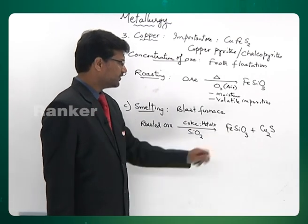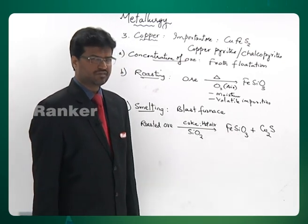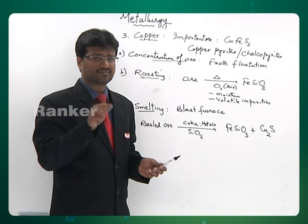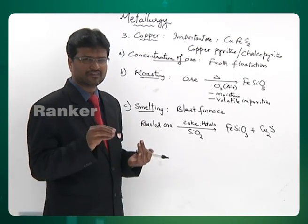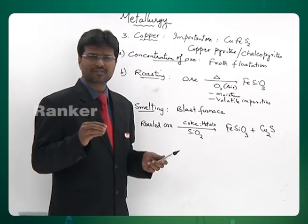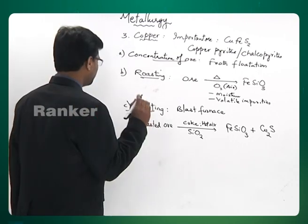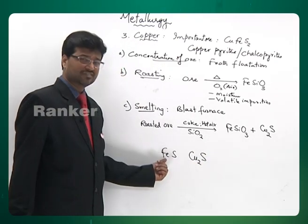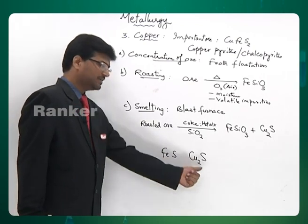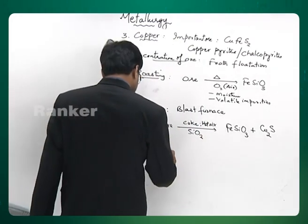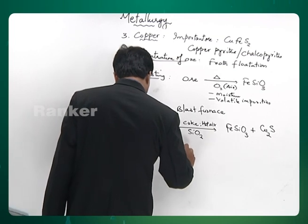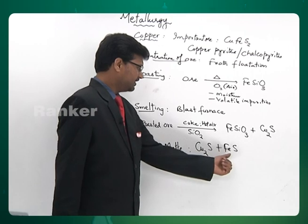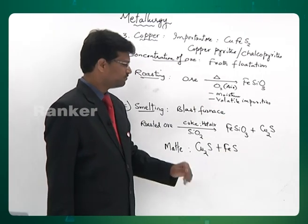Even if a small amount of copper sulphide becomes copper oxide, it becomes copper sulphide again by reacting with ferrous sulphide. As long as the more active metal FeS is available, copper will not get oxidized. It is impossible to oxidize Cu₂S in the presence of FeS — an exchange reaction takes place. The end result of smelting is called MAT, which consists of Cu₂S and FeS, with less FeS than at the beginning.